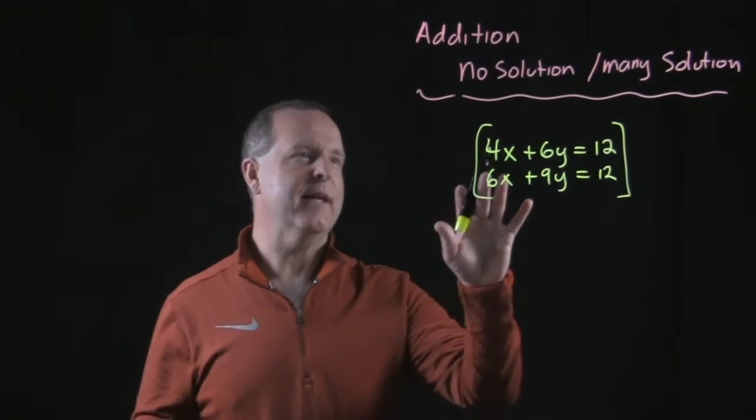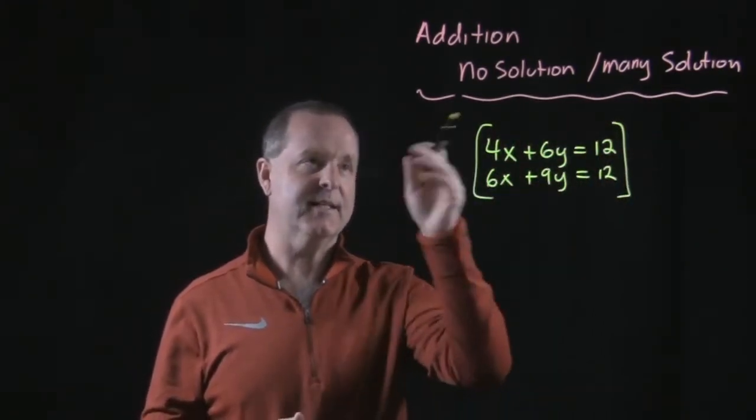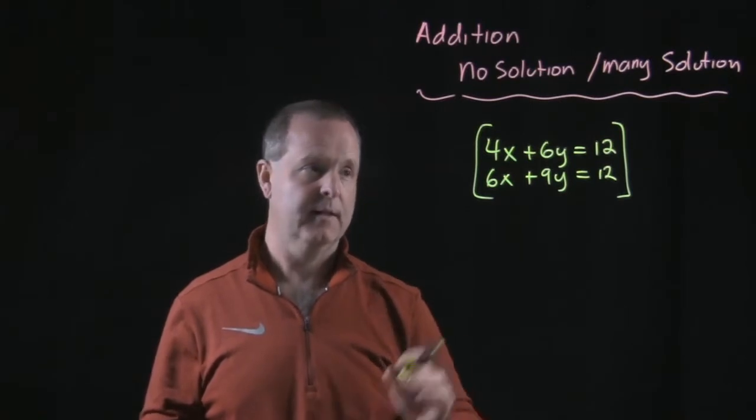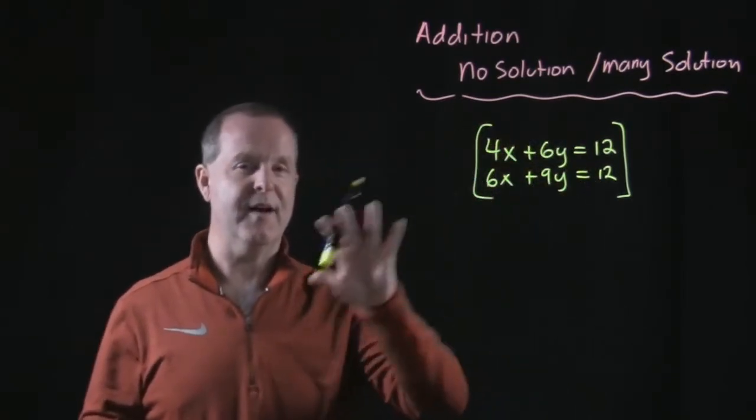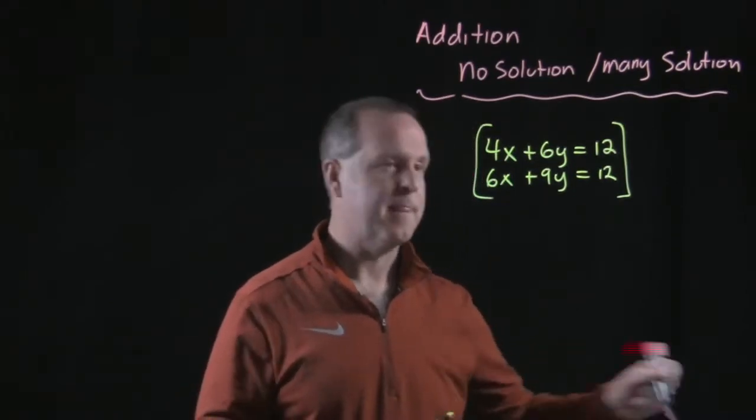So how do we tell if the system is inconsistent or has many solutions? Inconsistent meaning there's no solutions. Well, here's a system that's one or the other. So let's work through our addition methods here and figure out what will happen.